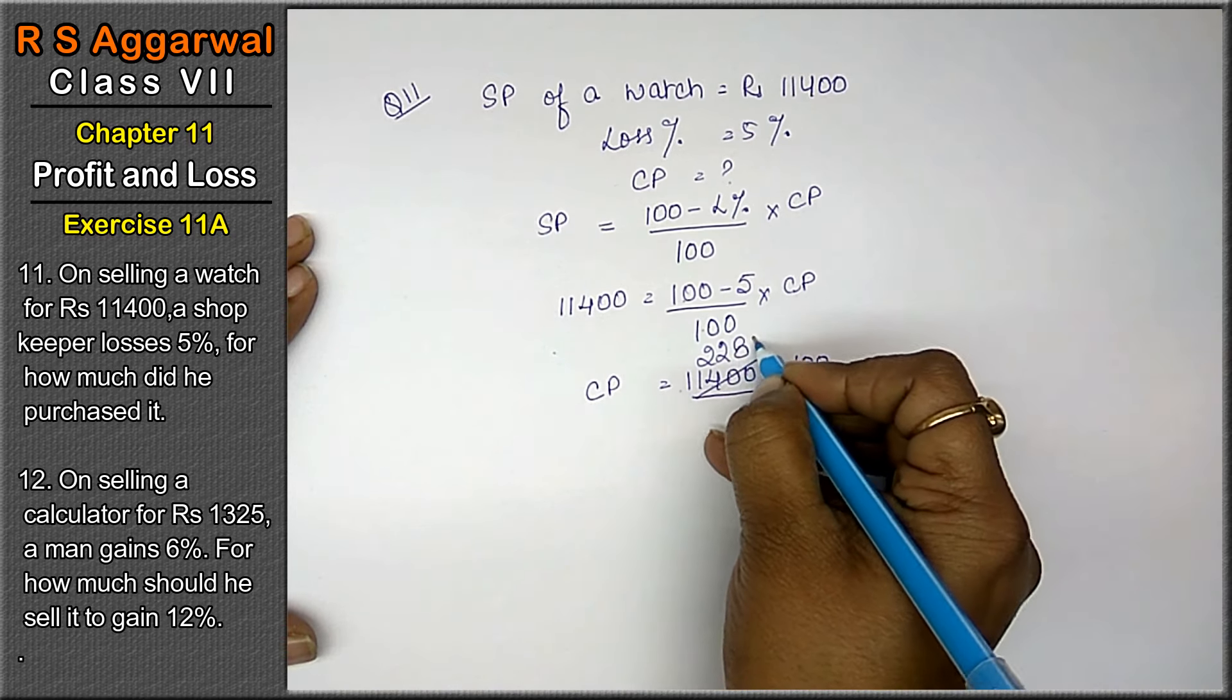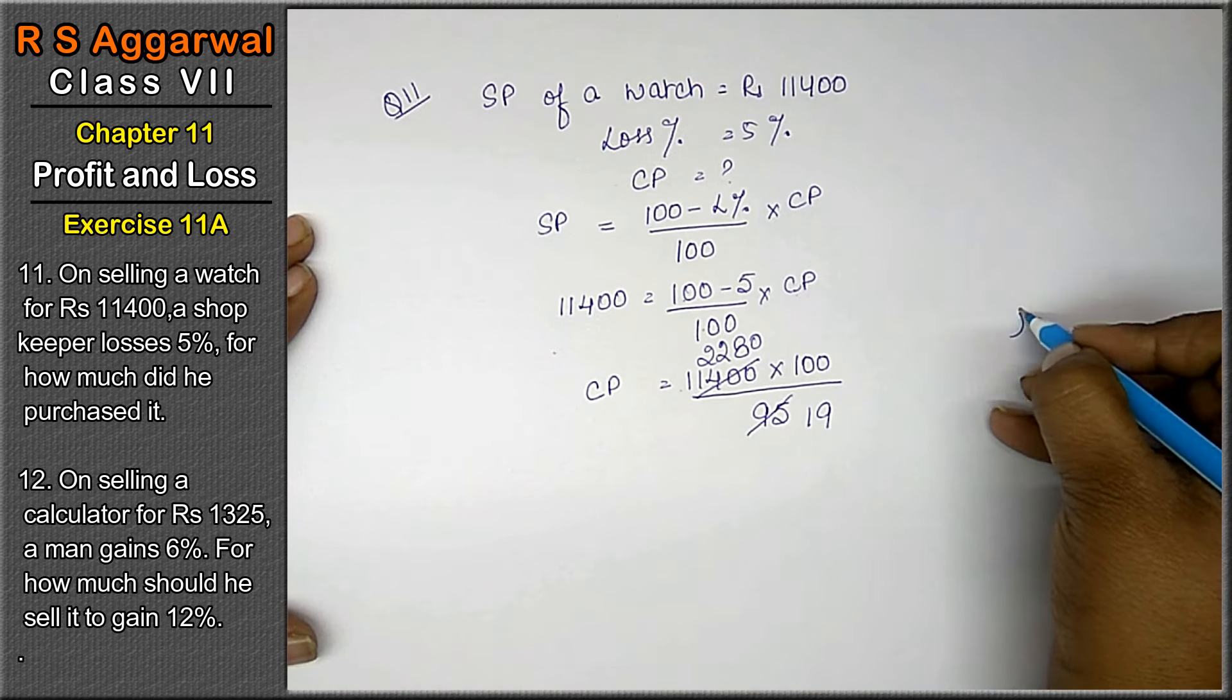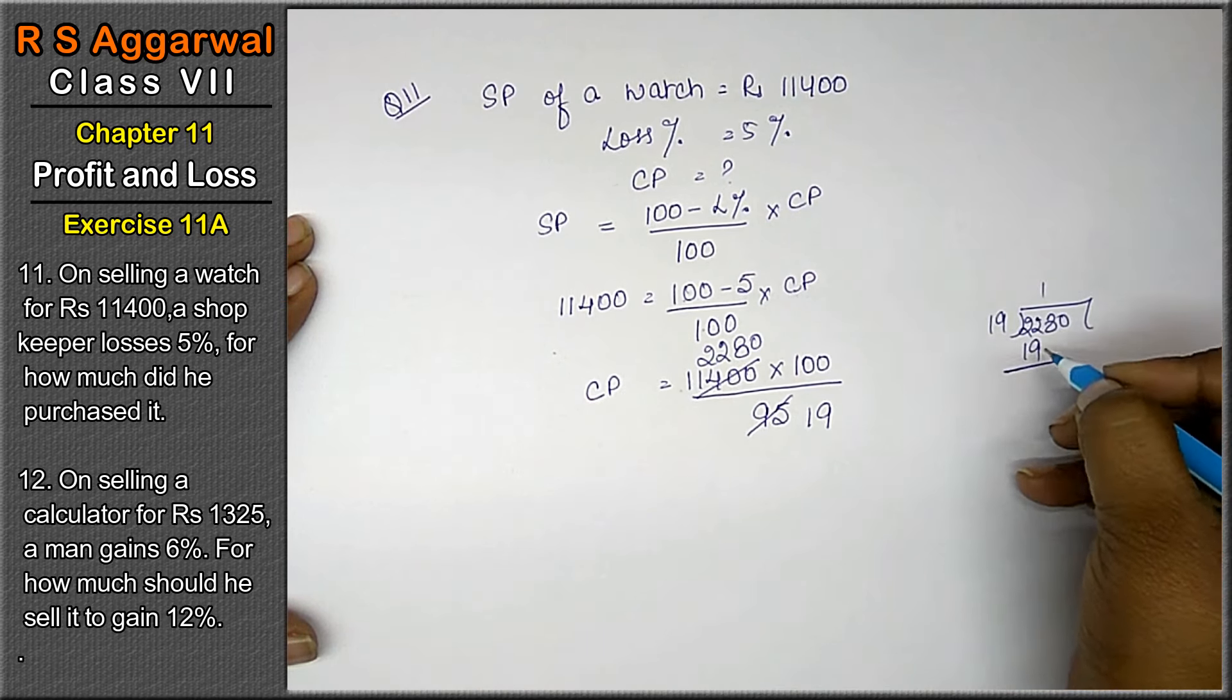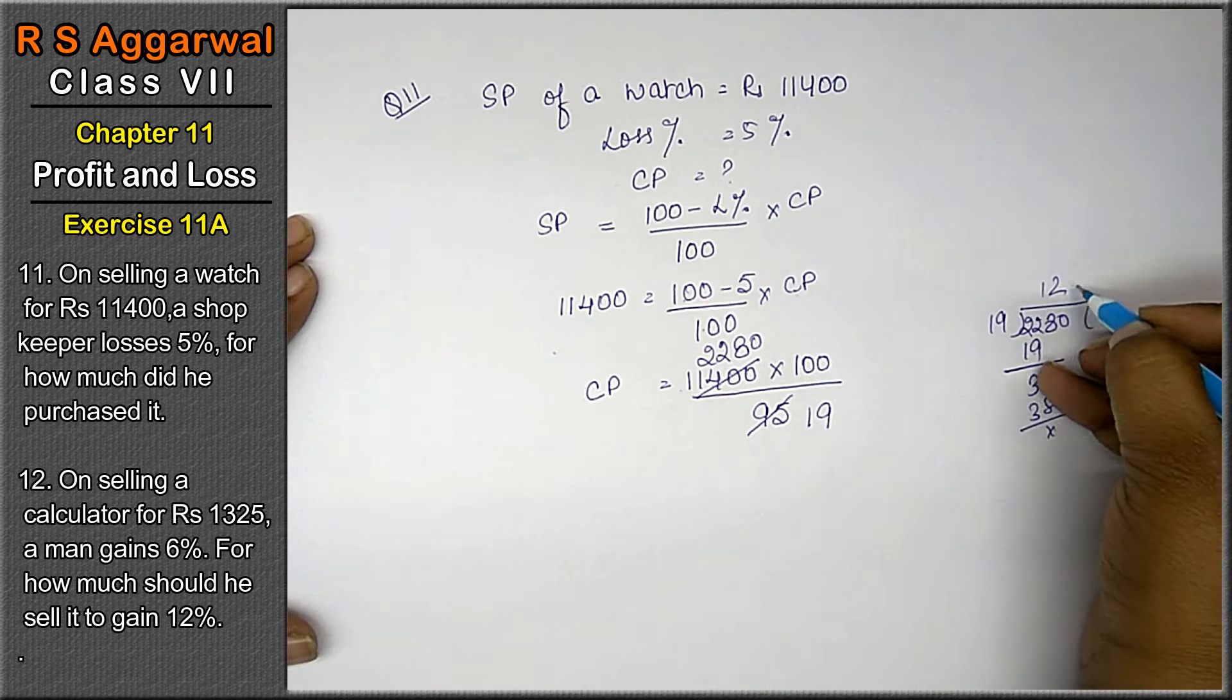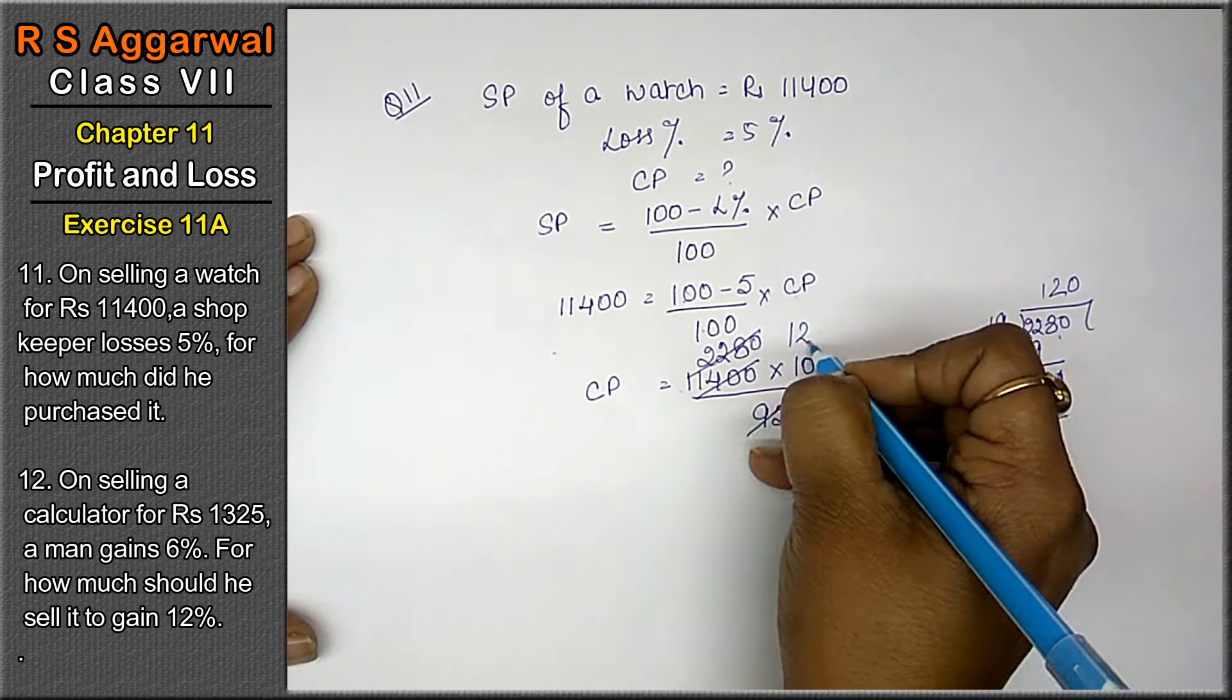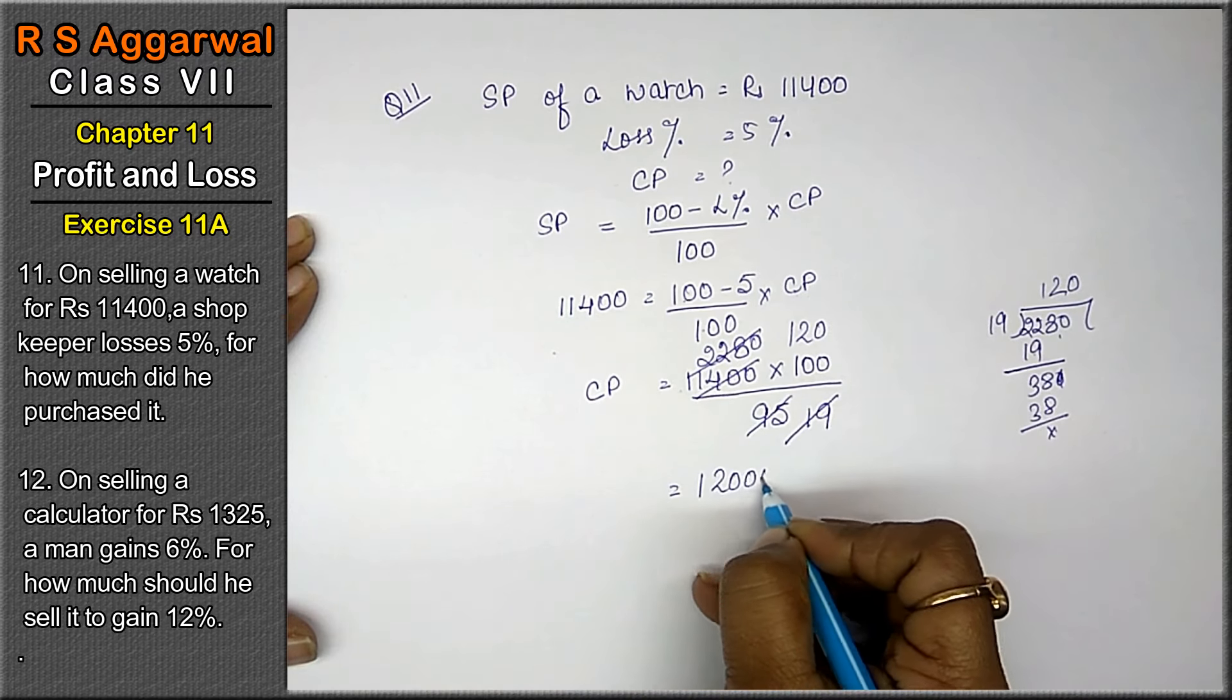5 × 1 is 5 and 0. Now we'll divide by 19. 19 into 2280: 19 × 1 is 19, this becomes 38, 19 × 2 is 38, and 0. That means 19 into 120 is 2280.